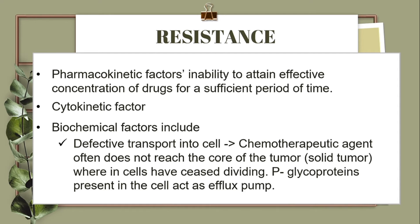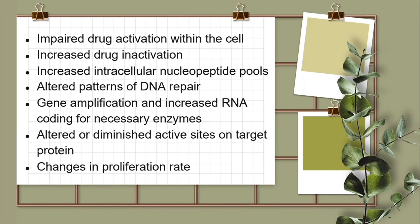P-glycoproteins present in the cell act as a flux pump. Impaired drug activation within the cell, increased drug inactivation, increased intracellular nucleopeptide pools, altered patterns of DNA repair, gene amplification and increased RNA coding for necessary enzymes, altered or diminished active sites on target protein, and changes in proliferation rate.